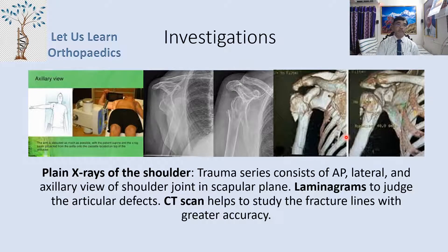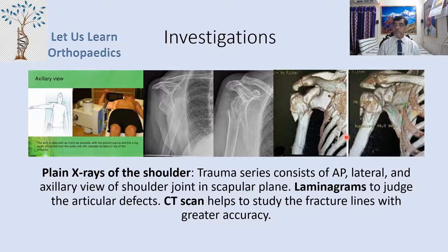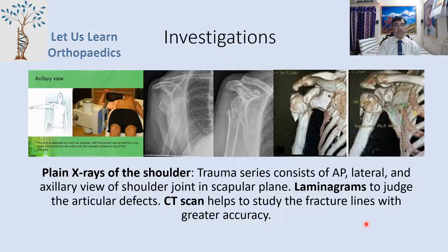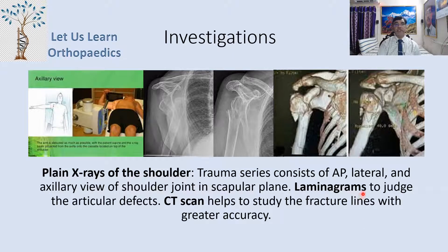For investigations, plain X-ray of the shoulder joint is used. A trauma series consists of AP view, lateral view, and axillary view of the shoulder joint and scapula. The laminogram to assess articular surface defects is also useful. CT scan with 3D reconstruction helps study fracture lines with greater accuracy.